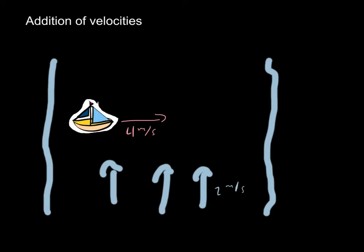So to do vector addition, we're going to draw our triangle. So we have 4 meters per second this direction. And then remember our head-to-tail method. So we have 2 meters per second this way.